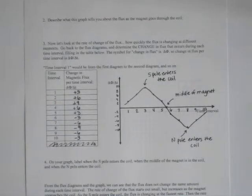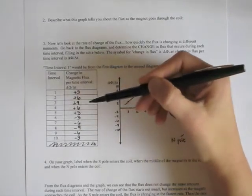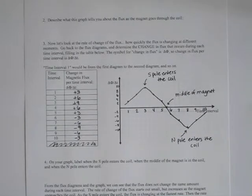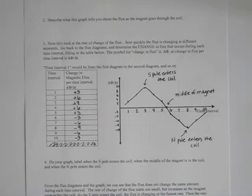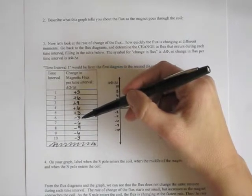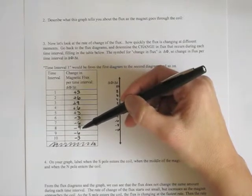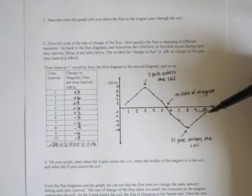From the flux diagrams and the graph, we can see that the flux does not change the same amount during each time interval. The rate of change of flux starts out small but increases as the magnet approaches the coil — a rate of change of 3, then 6, then 9 as the south pole enters. Then the rate of change decreases and reaches zero when the middle of the magnet is in the coil. As the magnet continues, the flux begins to change faster again, decreasing by 3, then 6, then 9 — the greatest decrease — then 6, then back to 3.